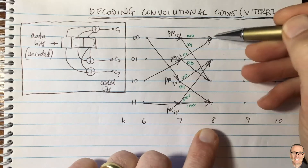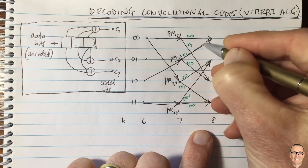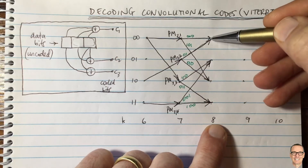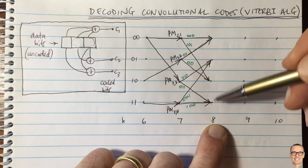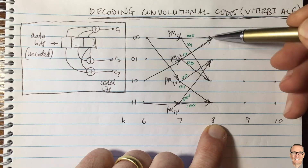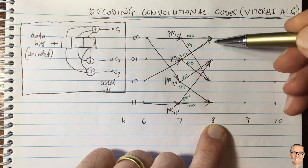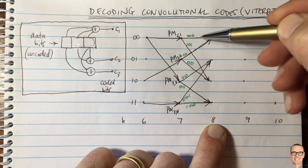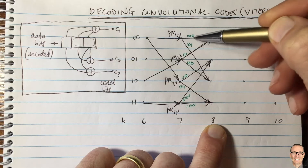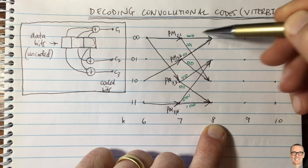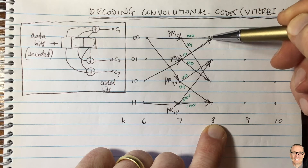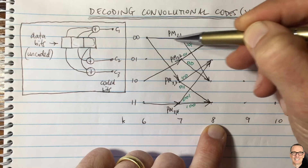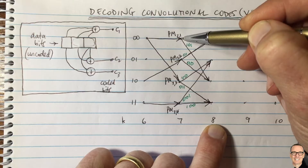The algorithm then moves to the next time slot. For each state, it looks at the coded bits received at the receiver and computes a branch metric — how closely the received bits match the expected bits for each incoming branch. The branch metric is added to the path metric of the path that arrived at the previous state, and whichever combination is lowest is the most likely path.